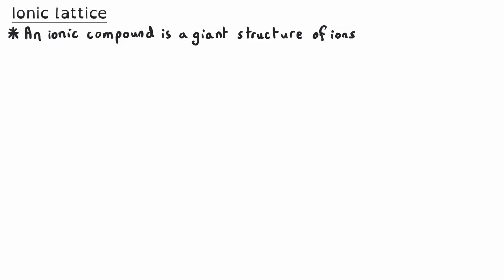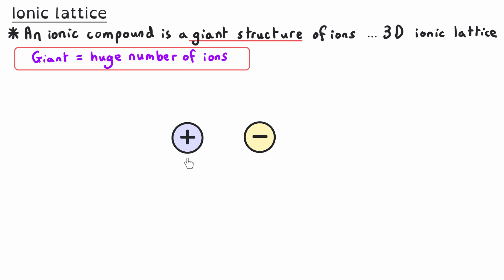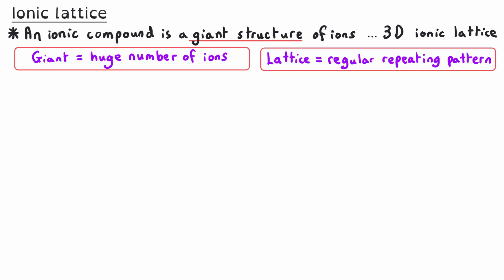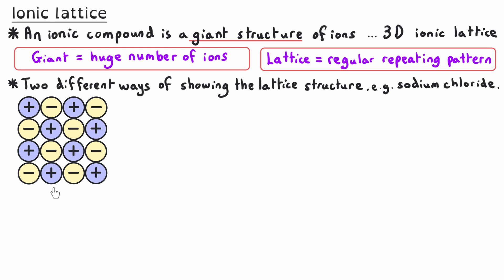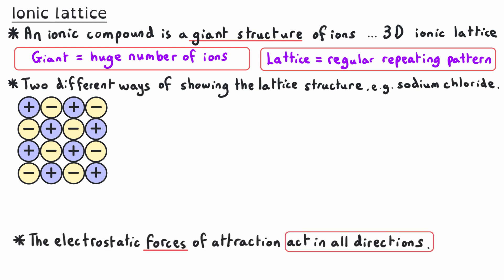An ionic compound is actually a giant structure of ions, sometimes referred to as a three-dimensional ionic lattice. The word giant refers to the fact that we have a huge number of ions, not just one positive and one negative. The word lattice refers to the regular repeating pattern throughout the structure. In a two-dimensional slice, you can see alternating positive and negative ions in a regular pattern, with electrostatic forces acting in all dimensions — each ion has four oppositely charged ions around it in that plane.